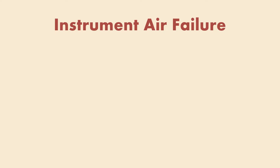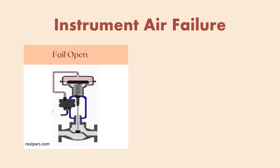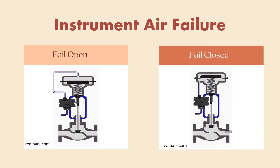So what if, for any reason, the instrument air system fails? This means that there shall be no air supply to the valve and the actuator won't work. The valve would be either totally open, totally closed, or it stays in its last position. This means that we should be ready for this scenario. When the instrument air supply is cut, would it be safe that the valve is fully open, or that it shall be fully closed, or that it stays at the last position?